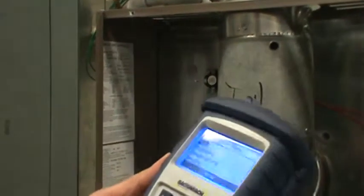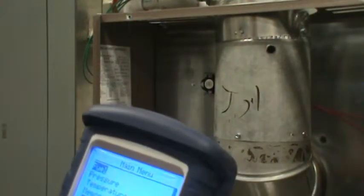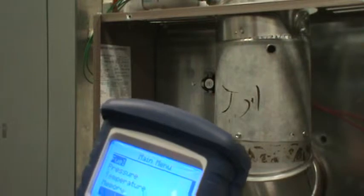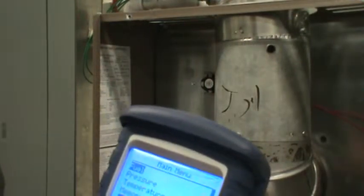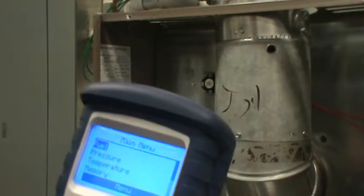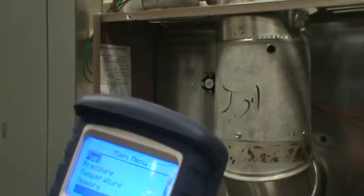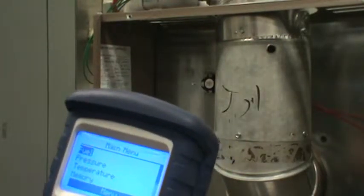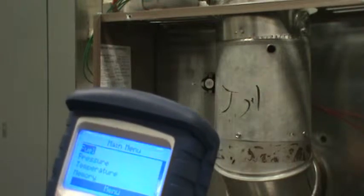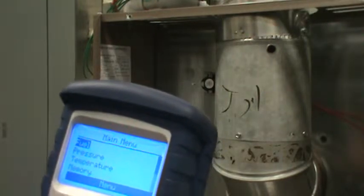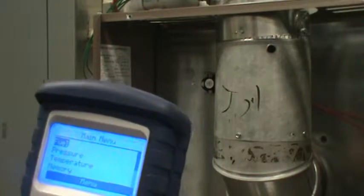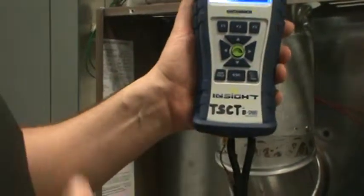All right, what we're going to look at now is measuring and analyzing combustion gases. We'll be able to tell our steady state efficiency, our excess air, carbon monoxide, carbon dioxide, our O2, our carbon monoxide minus free air. So we're going to look at how to read all these values on our sheets here using our Insight.